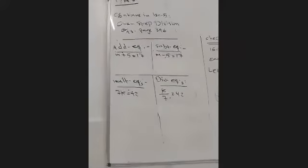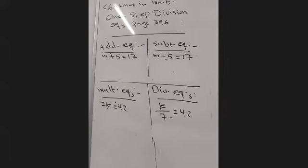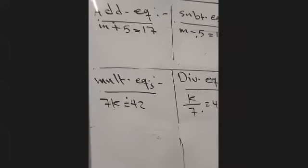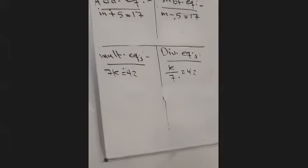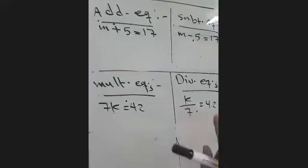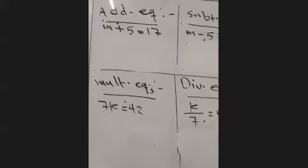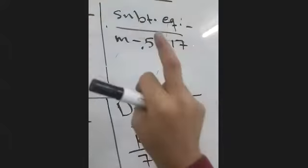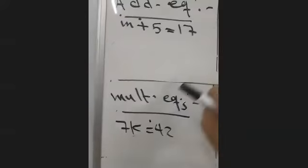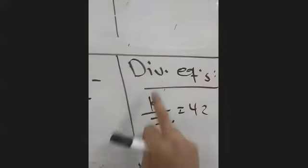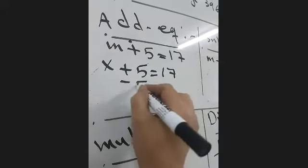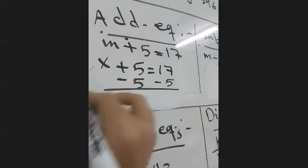Let's start now. Today we'll continue with one-step division equations. Let's remember the types of equations we have done until now: four types — addition equations, subtraction equations, multiplication equations, and division equations. Addition equations have an addition sign, subtraction has a subtraction sign, multiplication has a multiply sign.